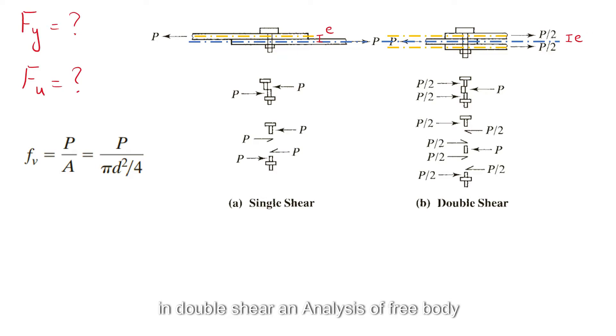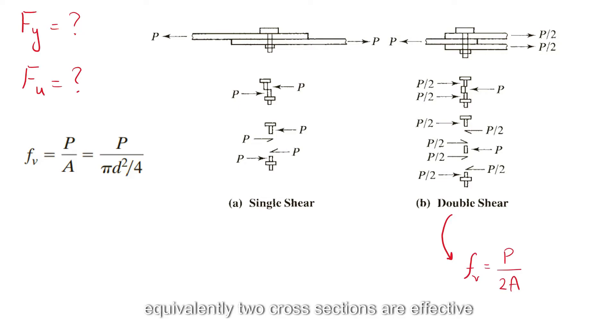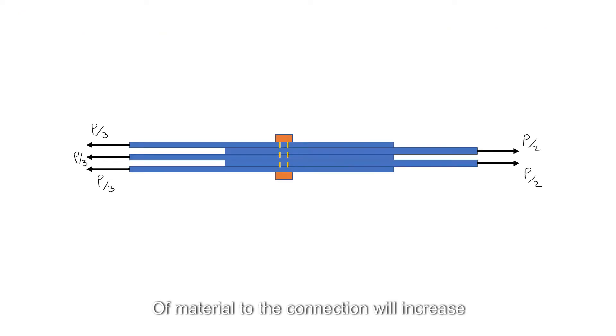In double shear, an analysis of free body diagrams of portions of the fastener shank shows that each cross-sectional area is subjected to half the total load, or equivalently two cross-sections are effective in resisting the total load. The addition of more thicknesses of material to the connection will increase the number of shear planes and further reduce the load on each plane.